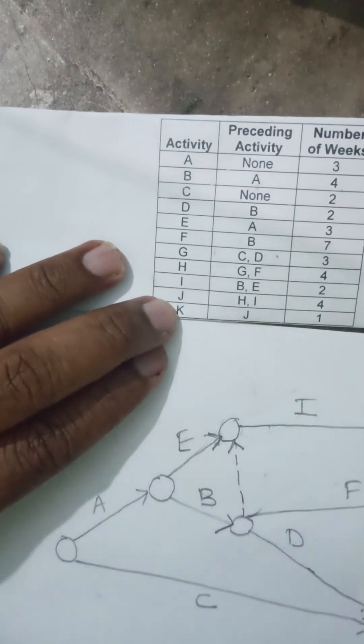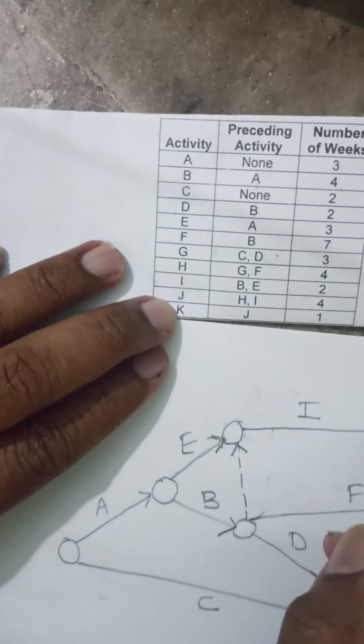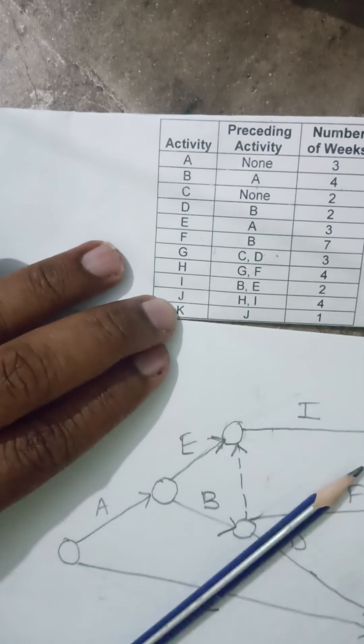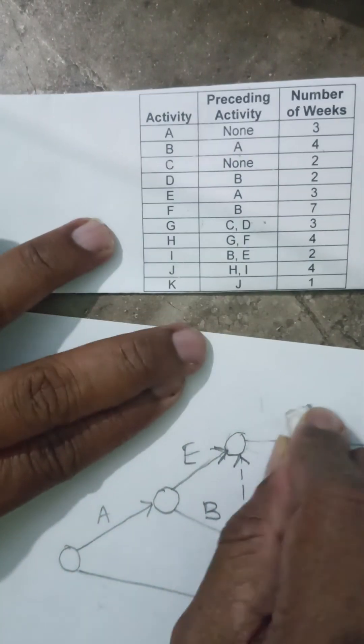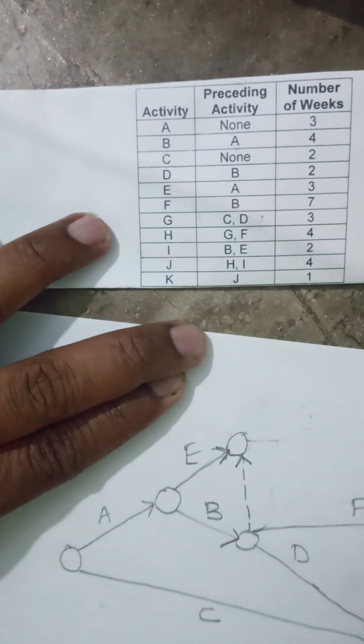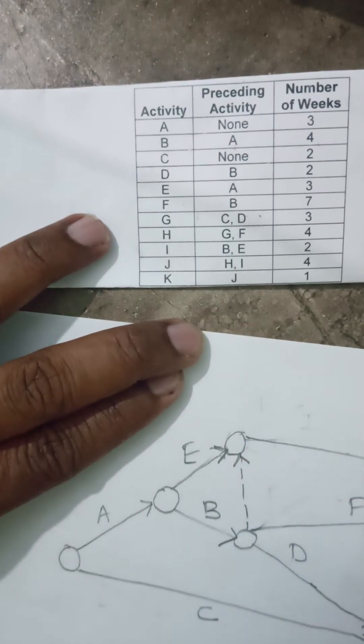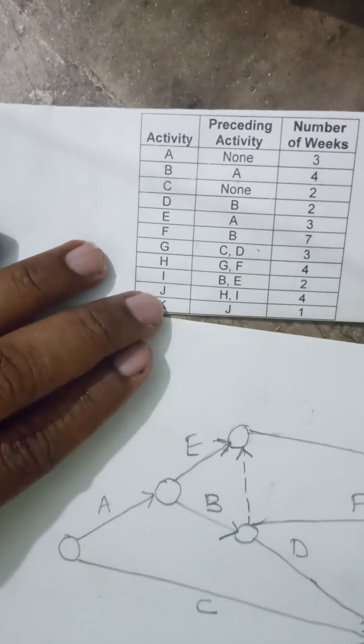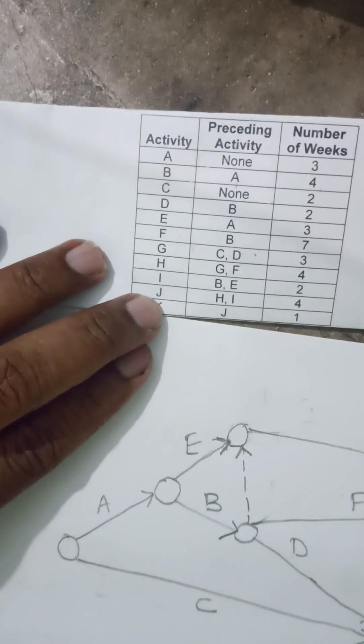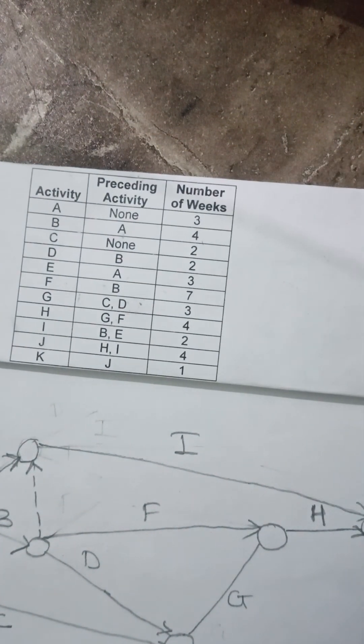J is from H and I. This H and I, I can again connect, maybe through a bend. But I will again, as far as possible, avoid bend. I will just use directly. This will be my I, and this is my H. And H and I gives rise to J. I am going to put J here.